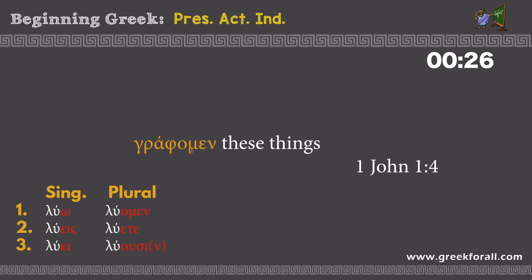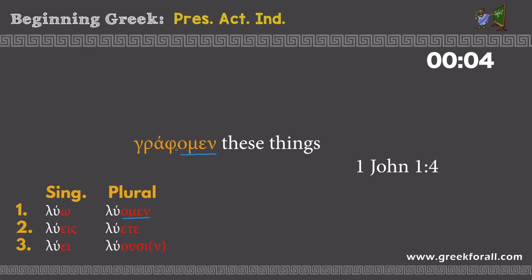This is our final example: 'graphomen tauta' — 'these things.' 'Grapho' means 'I write.' We see the ending -omen, which by this time we have seen several times — it is the first person plural meaning 'we.' So we translate 'graphomen' as 'we write' or 'we are writing' these things.